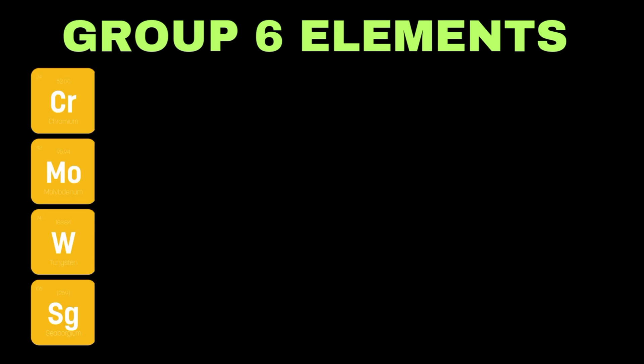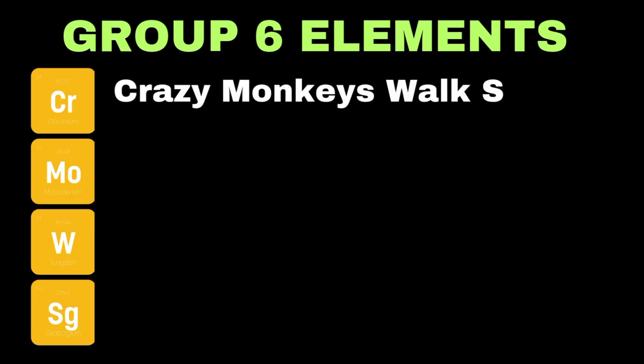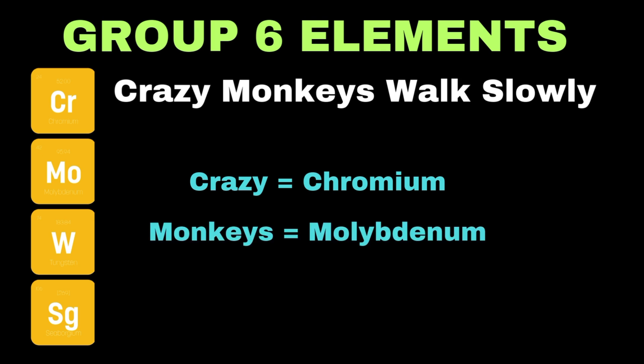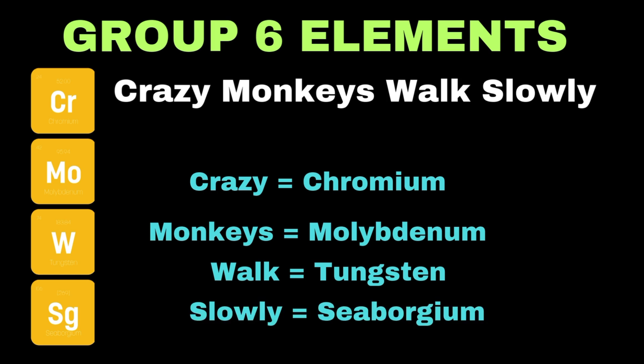Now moving towards group 6 elements, one simple trick to remember their names is: 'Crazy monkeys walk slowly.' Here 'crazy' refers to chromium, 'monkeys' represents molybdenum, 'walk' represents tungsten (symbol W), and 'slowly' denotes seaborgium (symbol Sg).